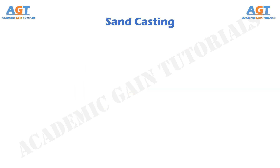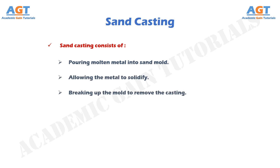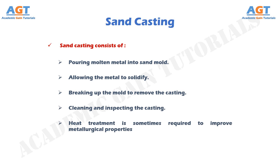Sand casting consists of pouring molten metal into a sand mold, allowing the metal to solidify, breaking up the mold to remove the casting, and cleaning and inspecting the casting. Heat treatment is sometimes required to improve metallurgical properties.